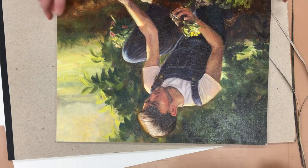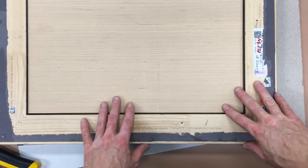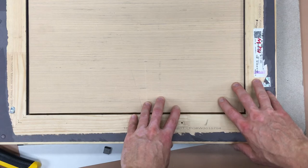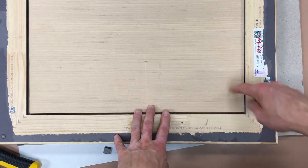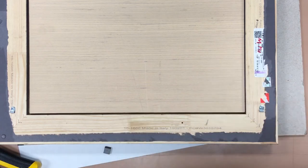You want to put it in the frame? Sure. Awesome. Here we've got the panel in the frame and we just have to attach it in there so it doesn't fall out. There's different ways you can do that. You can use offset clips, you could even use nails, or there are glazer points that you can push in with a flat screwdriver.